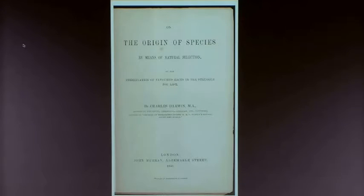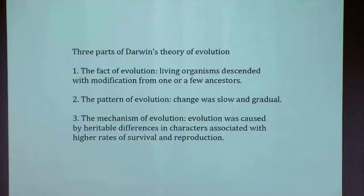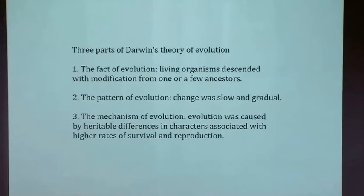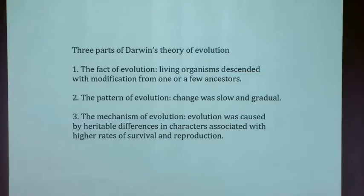I will follow Steve Gould in distinguishing three parts of what's in the Origin. First of all, there is the fact of evolution — that evolution occurred. Darwin didn't call it that; he called it descent with modification, but it means the same thing. Species evolved from something else. Darwin emphasized that there was probably one or only a few common ancestors, and from these, the diversity of life evolved.